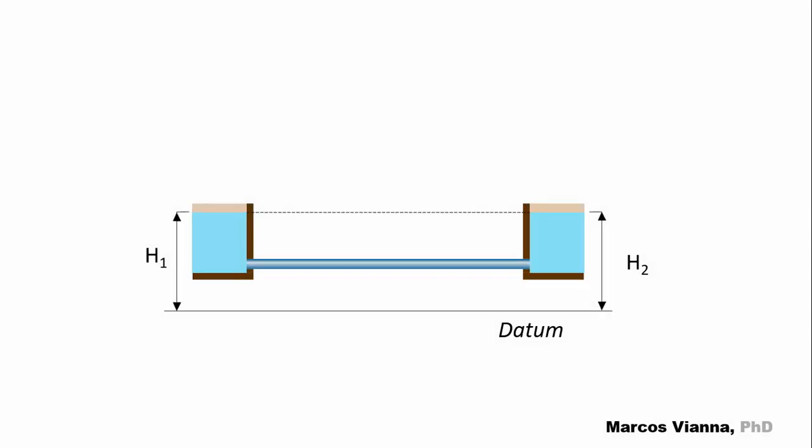Here we have two vessels containing water. They are linked to each other through a pipe. The water level is the same in both, so of course, the water will be still.